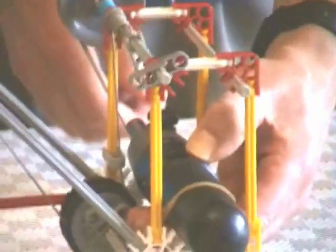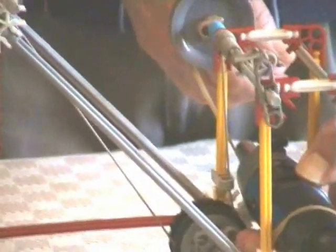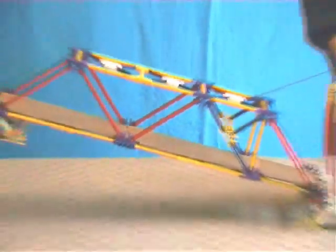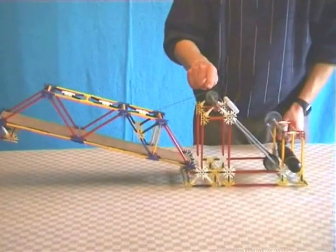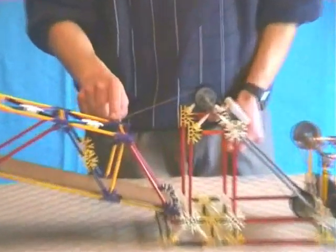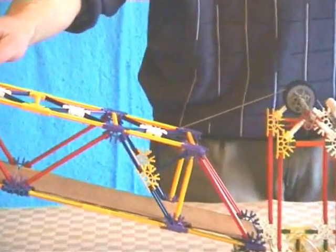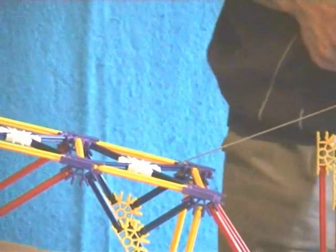So when I press the switch, turn on the motor, you can see the bridge rising. If I stop, the bridge stays in its position. The cable passes down over a pulley here, and up over another pulley, and is attached to the rising part of the bridge.